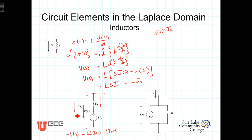Thus, this series combination of an inductor with quantity S times L in series with this voltage source of quantity L I naught represents both the inductor and the initial conditions or the initial current associated with the inductor.